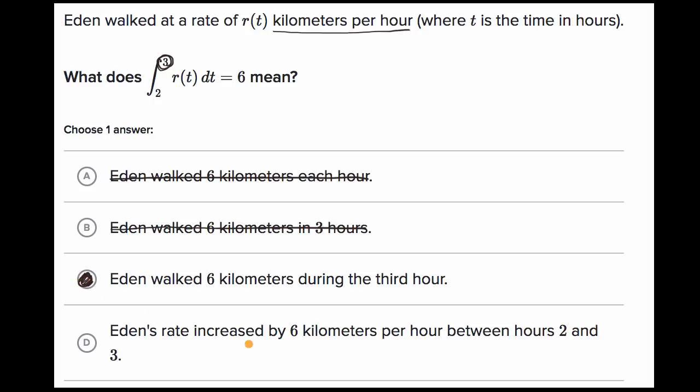Eden's rate increased by six kilometers per hour between hours two and three. Let's be very clear. This isn't a rate. This is the area under the rate curve. That's what this definite integral is representing. This isn't telling us about our rate changing. This is telling us how does the thing that the rate is measuring the change of, how does that change from time two to time three. So we would rule that out as well.